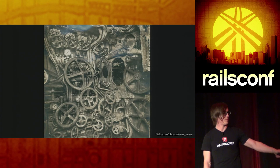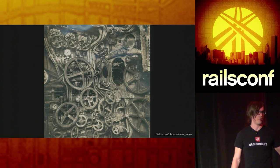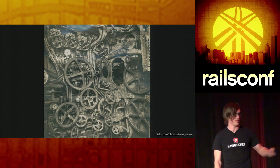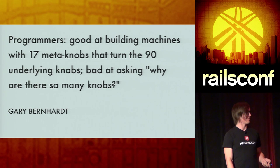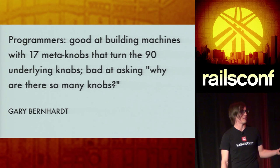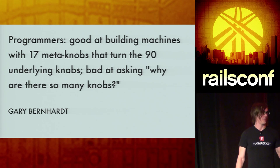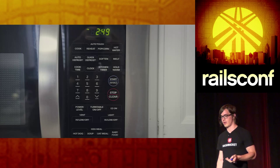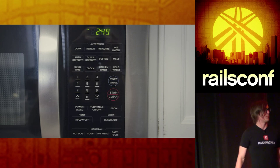This is a wall of controls — there's just a thousand things to do on a microwave. I really like this quote from Gary Bernhardt: 'Programmers are good at building machines with 17 meta knobs that turn the 90 underlying knobs. They're bad at asking, why are there so many knobs?' And I don't think that's just about programmers — I think it applies to anyone. So we have this microwave, and we have the intuition test: does it do what I think it will do?